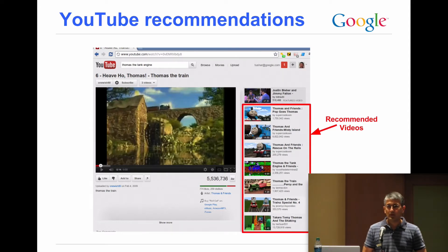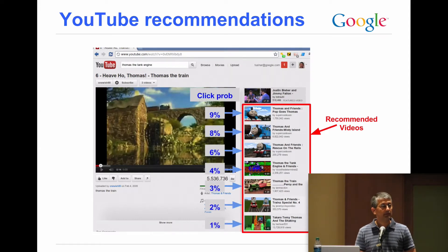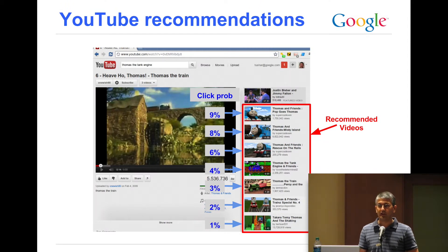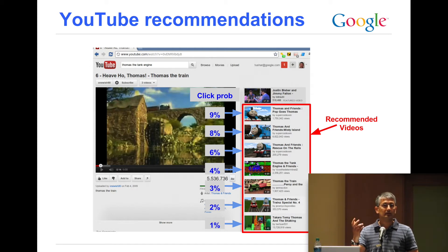We decided to use machine learning to try to improve the quality of these recommendations. We looked at historical data of how users have interacted with our website, and we used that to build a model that predicts how users will react in the future. A model will now predict the probability that the user will click on a particular video recommendation — for example, a 9% chance they click on the first recommendation, 8% on the second, 6% on the third. If you have an accurate model, you get a whole bunch of candidate videos, feed them into the model, ask it to predict what happens if you show those videos, then take the top-ranking videos with the highest click probabilities. That's how we use machine learning to improve the quality of video recommendations.